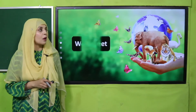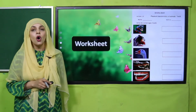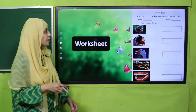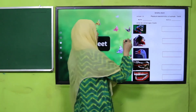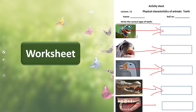Now is the time for practice. You can download this worksheet from the description box below this video, or you can get it in print from your teacher. Write down your name and roll number, then write the correct type of teeth: frogs have vomerine and maxillary; fish have small teeth; birds have ridges; alligators have conical teeth; and humans have a variety of teeth.